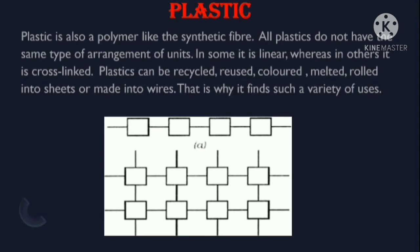Now let's see plastics. Plastic is a polymer, like a synthetic fiber. All plastics do not have the same type of arrangement of units — in some it is linear, whereas in others it is cross-linked. Plastics can be recycled, colored, rolled into sheets, or made into wires, which is why they find such a variety of uses.